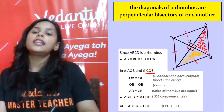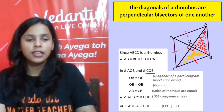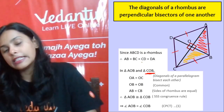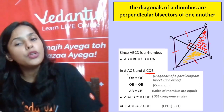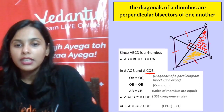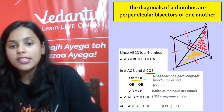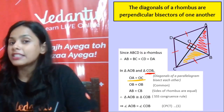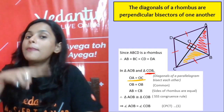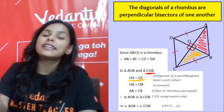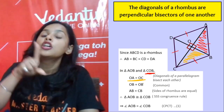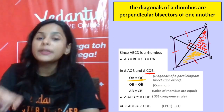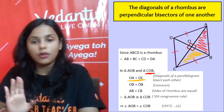Take this triangle and this triangle. In these two triangles, what do you already know? OA is equal to OC because diagonals of the parallelogram bisect each other. Therefore, diagonals of the rhombus are also going to bisect each other.